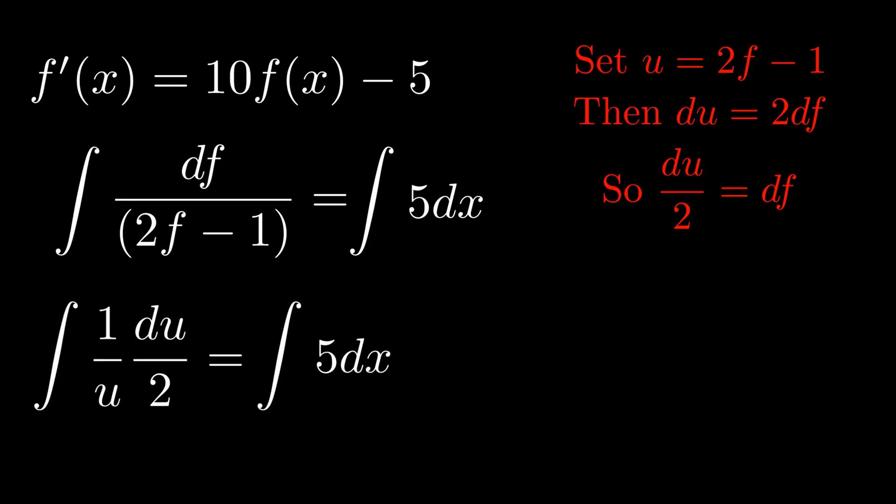And we can just substitute this into the integral on the left hand side. So we have the integral of 1 over u du divided by 2 is equal to the integral of 5 dx. Which is really easy to integrate. So upon doing that and then multiplying both sides by 2 we get the natural logarithm of 2f minus 1 is equal to 10x plus 2c1, where c1 is just a constant of integration.